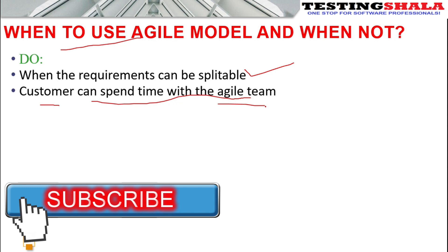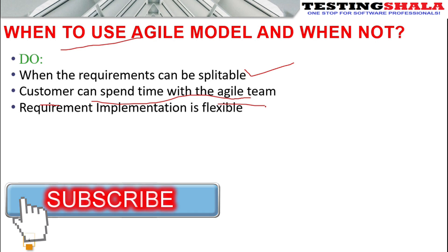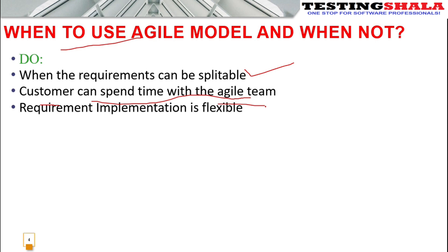The third factor is that the requirement implementation must be flexible. If the implementation is very rigid and must be delivered within one or two months with no room to adjust, we normally do not use agile. When there is flexibility, issues that arise during implementation can be accommodated. If that flexibility is not there, agile won't be recommendable.